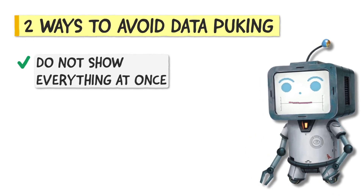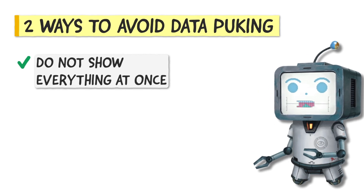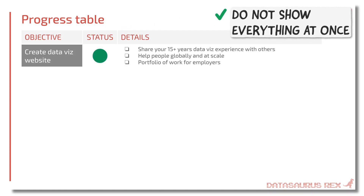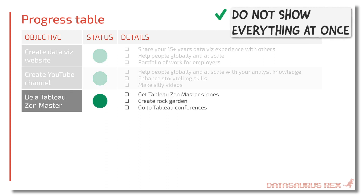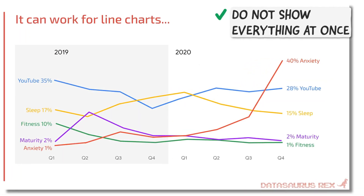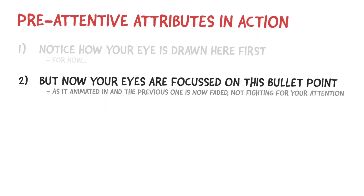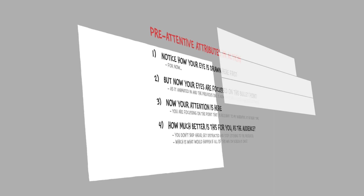Secondly, if you can't avoid having a lot up on the screen, chances are you don't need it up there all at once. Draw attention to the parts you're talking about at the time by animating them in, fading out old parts, and using pre-attentive attributes to draw the eye. See how your eyes are naturally drawn to the parts that are not faded as they appear. This can easily be done by animating in semi-transparent white shapes on top of the parts you don't want people to focus on anymore.